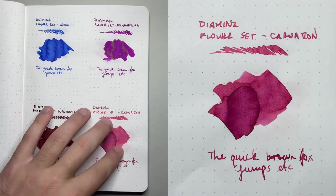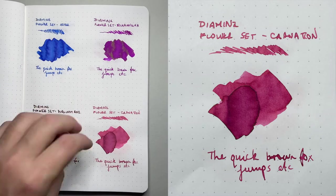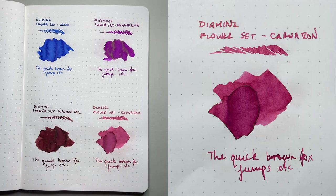Then we have Carnation, which is the pink of the set really and it's a nice dusty pink. It's not too vibrant. It's a little light perhaps for everyday writing, but some of the darker shading is really beautiful there.